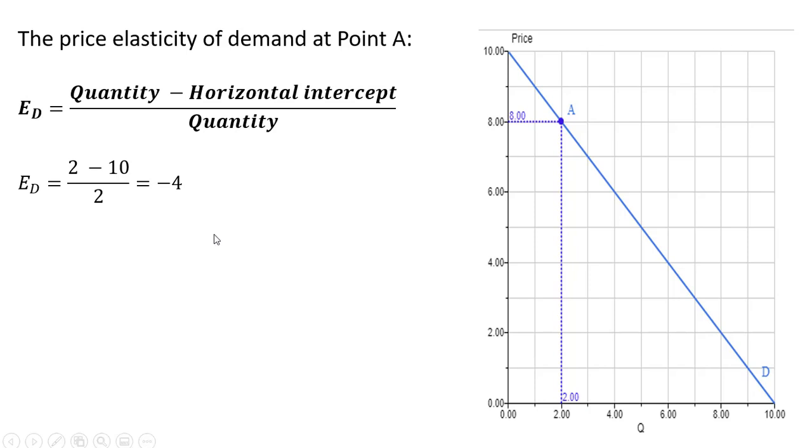The proof as to why we can use this formula to calculate the point price elasticity of demand is as follows. The elasticity of demand is the slope of the demand equation multiplied by the ratio of price to quantity. We can rewrite the slope of the demand equation as 1 divided by the slope of the demand curve.